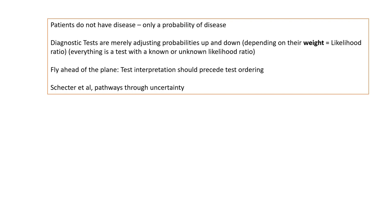The likelihood ratio is a synthesis of sensitivity and specificity. We should always 'fly ahead of the plane' — test interpretation should precede test ordering. If the pre-test probability of a condition is maybe only 2%, then a positive or negative test may not change management, so don't order it. Similarly, if I order a CT abdomen and it comes back negative, what do I do? It's really important to think through these scenarios before ordering, so that when the result comes, the decision is already clear and you can inform the patient in advance.